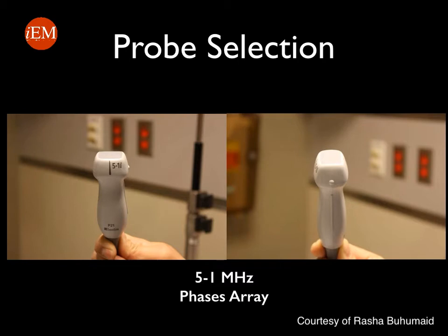Note the small footprint of the probe, which is very suitable to be placed in between the intercostal spaces and obtaining the appropriate window. If you don't have this phased array probe, you can use a curved probe, or what we call the abdominal probe, to obtain some of these views, but that will be very challenging because the abdominal probe has a large footprint that will not really fit in between the intercostal spaces.